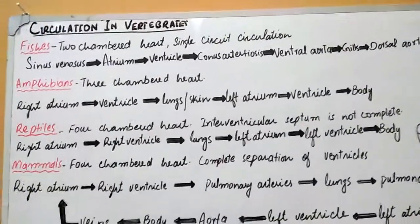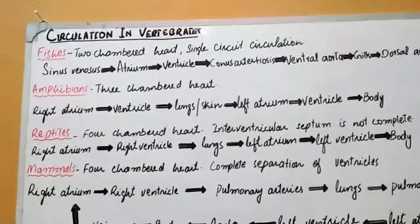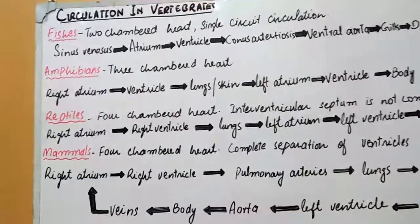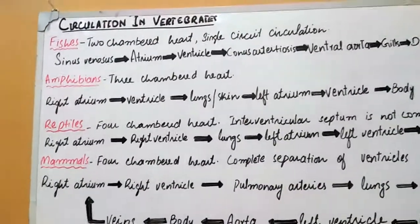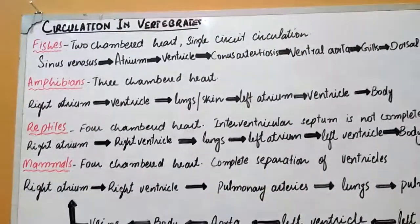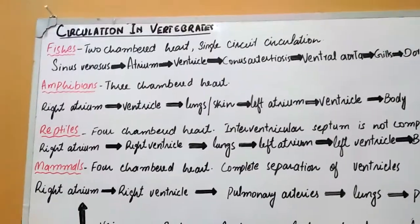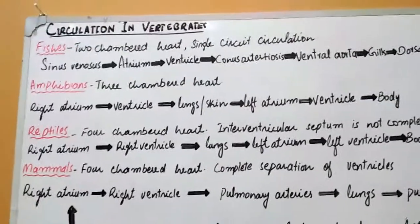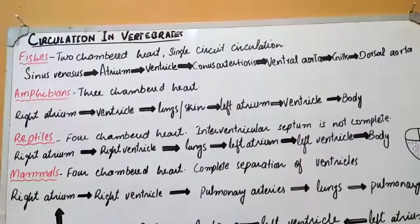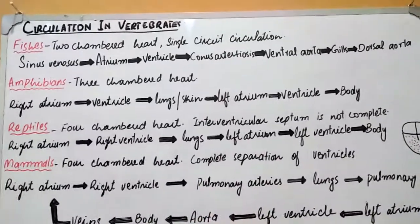Today we shall study the circulation in vertebrates. Firstly, we will study circulation in fishes. In the case of fishes, their heart is two-chambered, meaning it has only one atrium and one ventricle. They also have single circuit circulation, as they have only two chambers of the heart, so blood passes only once from their heart.